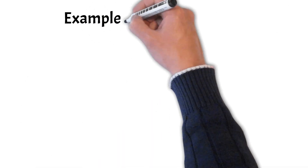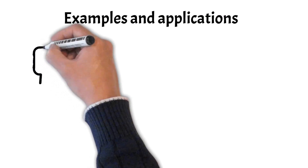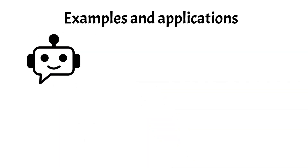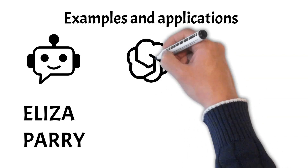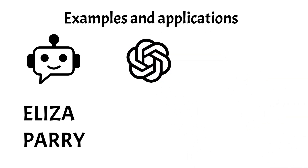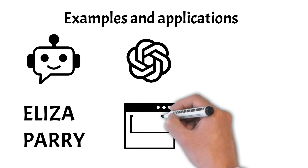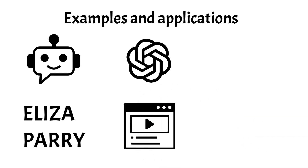Now let's see some practical examples where the Turing test is used. The Turing test has inspired numerous examples and applications in the field of artificial intelligence, particularly in the development of conversational agents and chatbots. Early AI programs like ELIZA and PERRY were designed to simulate human conversation and were among the first to be evaluated using Turing test principles. Modern applications include sophisticated AI systems like OpenAI's GPT-3, which can generate human-like text and engage in complex dialogues. These technologies are widely used in customer service, virtual assistance, and interactive entertainment where the ability to mimic human conversation enhances user experience.